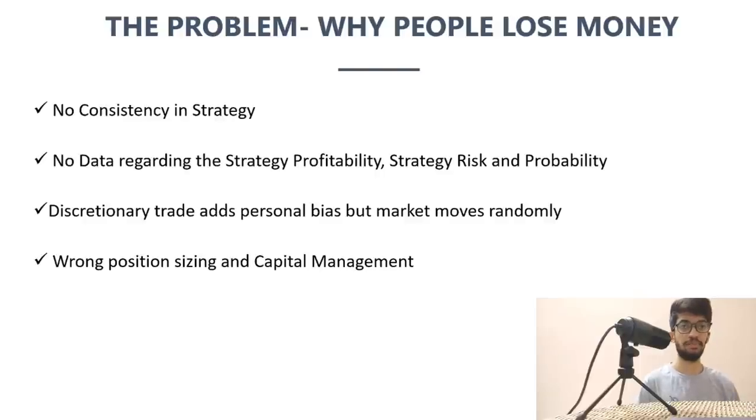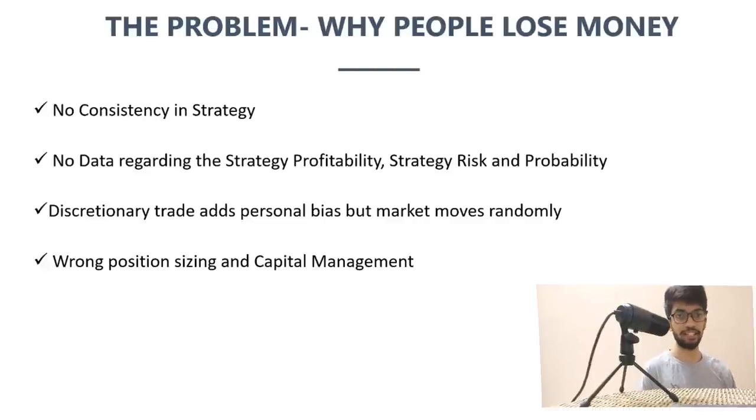The next major problem is wrong position sizing and capital management. If you have 50,000 and buy options for 25,000-30,000 that go to zero, half your capital is wiped out. If you take excessive leverage — say with two and a half lakh you short 10 lots — one wrong trade and your entire capital is gone. That's why I urge you to stay till the end. Don't execute until you see the capital management section.